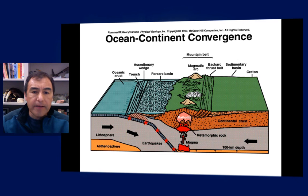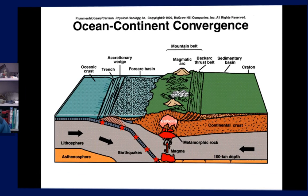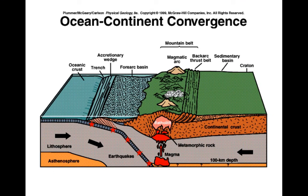Here's another sketch of an ocean-to-continent convergent boundary. Note that at about 100 kilometers we're seeing hydrous flux melting in the mantle wedge. Those ascending magmas are mafic and could experience fractionation to produce a more felsic batholith. You also see the volcanoes of the magmatic arc — like the Ritter Range, with those 100-million-year-old volcanoes.